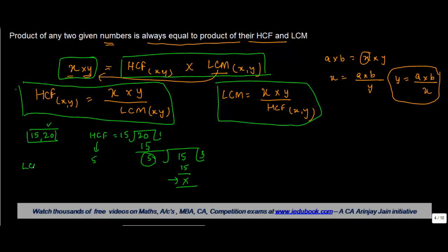Let us find out the LCM. 15, 20. Again, we divide it by 5. 15 when divided by 5 gives you 3. 20 when divided by 5 gives you 4. Why did we divide it by 5? We know the highest common factor is 5. So obviously, if I will divide both these numbers.